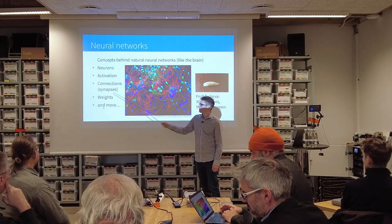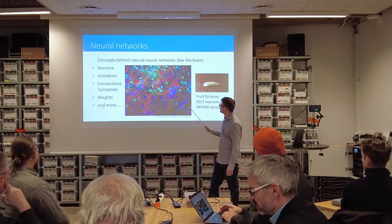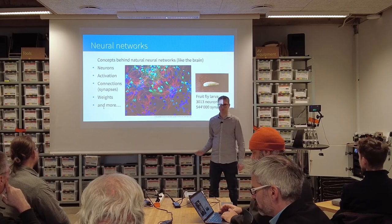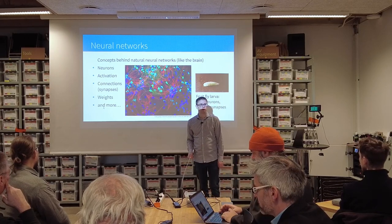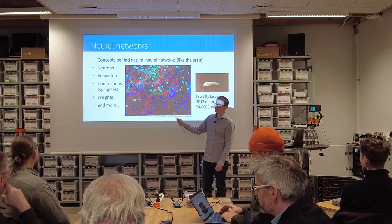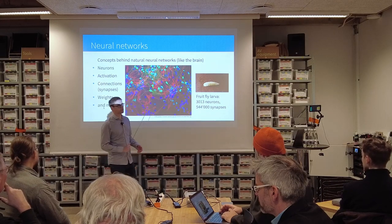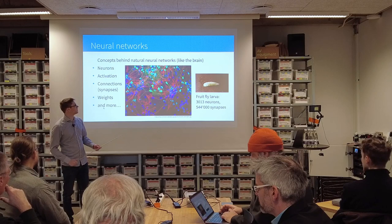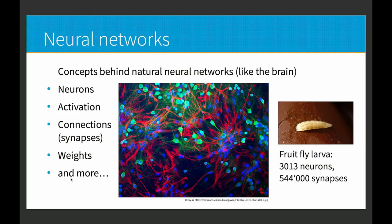Then we have connections, which in natural networks are called synapses. You can see all these wires all spaghettied around. These connections have weights, which means some of them are very strongly connected and some are just weakly connected. Also, the weights can be positive or negative — there can be connections so that one neuron being active makes another neuron more active, or a negative connection where one neuron being active tends to make the neuron at the other end calmer.